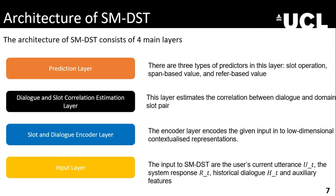This is the architecture of our similarity-based dialogue state tracking model. We have an input layer at the bottom based on the user's current utterance UT and the system response RT, together with historical dialogue H(D), which captures user-response pairs for all previous conversations. There are also auxiliary features indicating whether slot values come from previous turns or from system-informed memory.